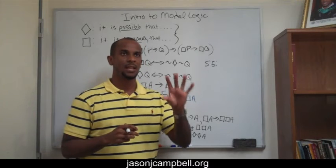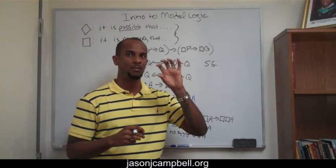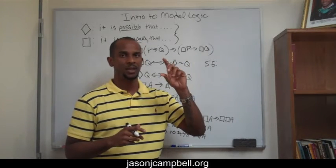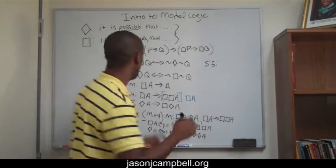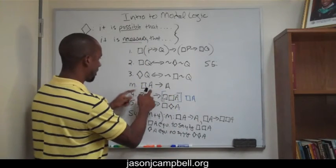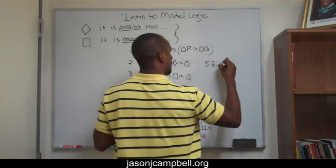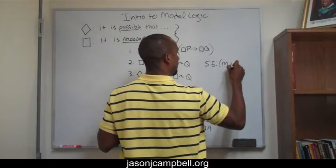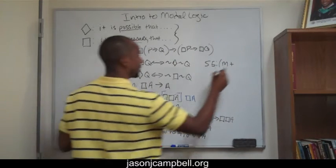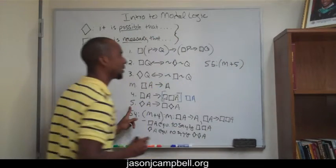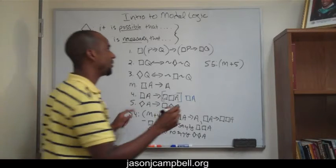S5 is nothing more than the combination of my modal axiom, if A is necessary then A, which is here. So S5 is the combination of M plus 5. So S5 becomes that combination of M plus 5, and what is that?